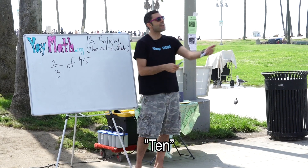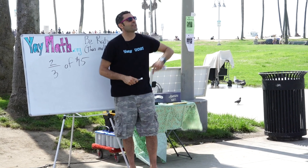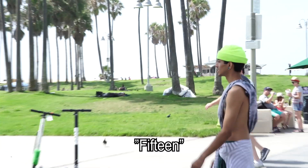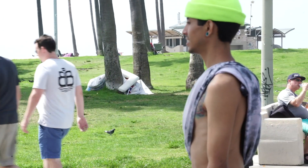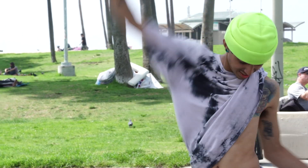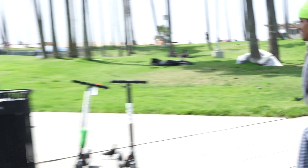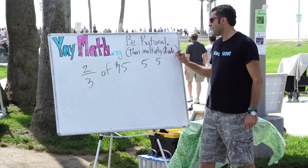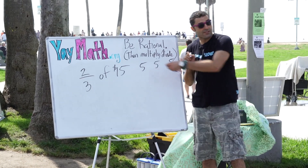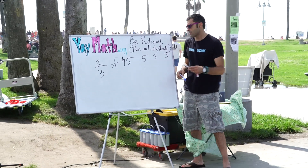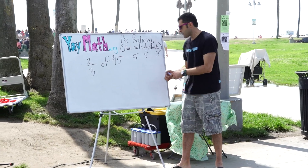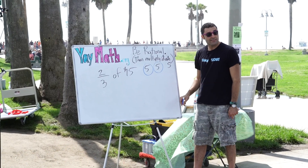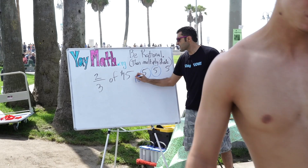What is it? Ten — nice! How'd you do it? Five, ten, fifteen — that's so good. So two-thirds of fifteen: you split it into three groups of five, and two-thirds of it would be this one and this one, so that's ten. Well done.